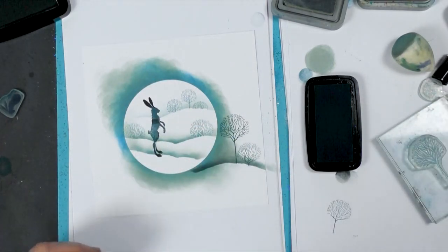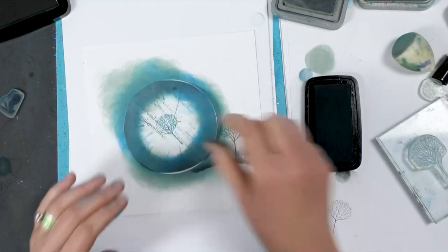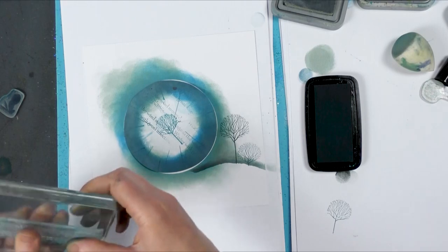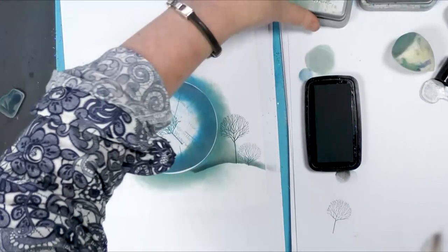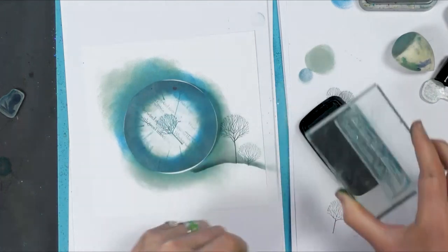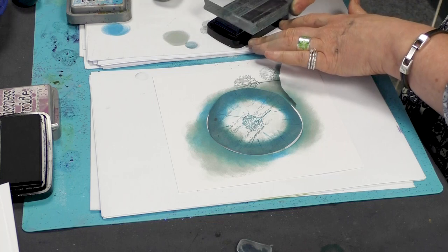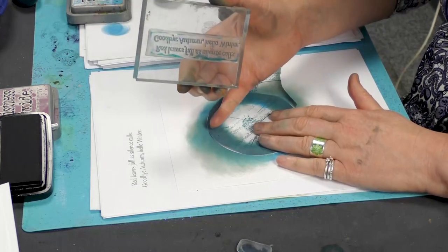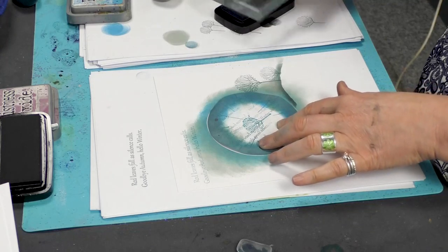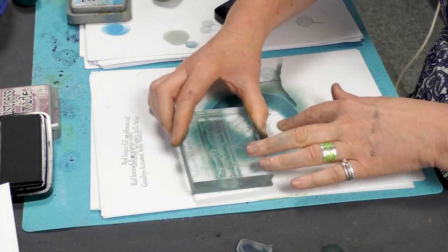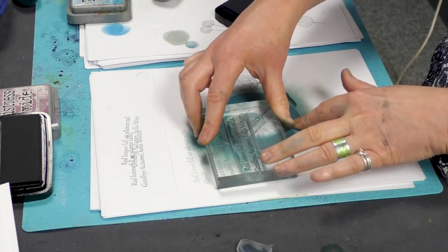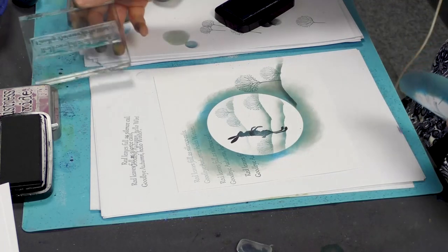I'm going to stamp some words along the top here as well. So I'm going to mask that area off. And taking one of our worded stamps. You can use whichever verse you like. I've got here, I've got red leaves fall as silence calls. Goodbye autumn, hello winter. I'm going to stamp off.